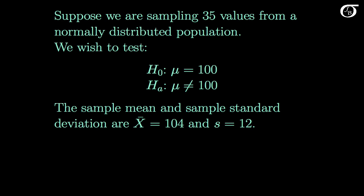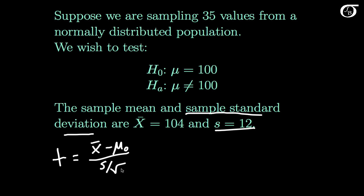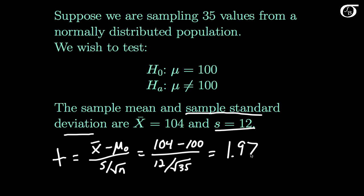Let's look at a quick example to illustrate the differences. Suppose we are sampling 35 values from a normally distributed population, and we wish to test the null hypothesis that the population mean is 100 against a two-sided alternative. The sample mean and sample standard deviation are found to be 104 and 12 respectively. Since we have a sample standard deviation, we should be using the t-statistic: x-bar minus mu-naught over s over the square root of n, which is 104 minus 100 over 12 over the square root of 35, and that works out to 1.972.